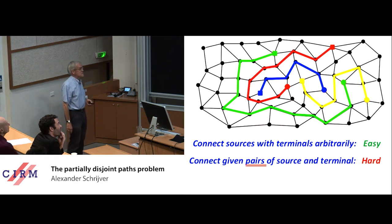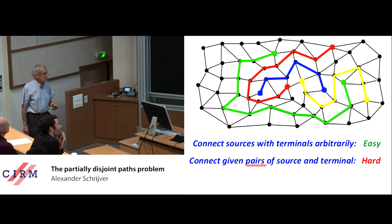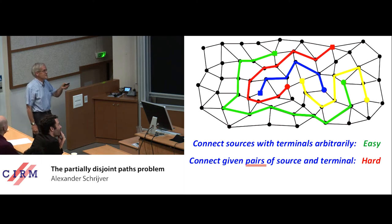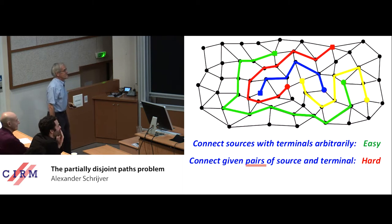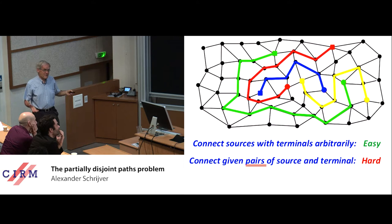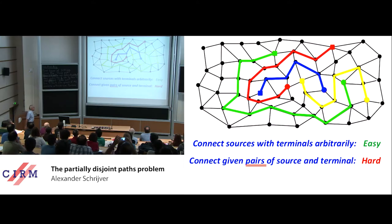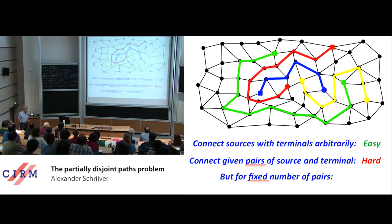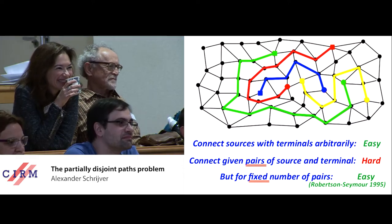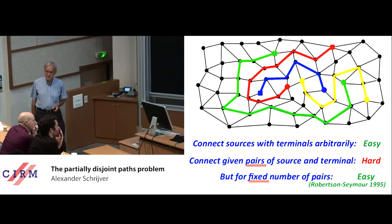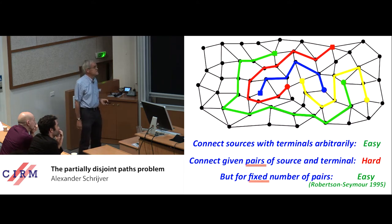That is hard, meaning NP-complete. It's usually hard to prove something is easy, and easy to prove something is hard. So hard just means NP-complete — maybe easier if P equals NP, who knows. But for a fixed number of pairs, there is a famous theorem of Robertson and Seymour from the 90s: it is polynomial time again. For four pairs, or four thousand, it is polynomial time for fixed k.